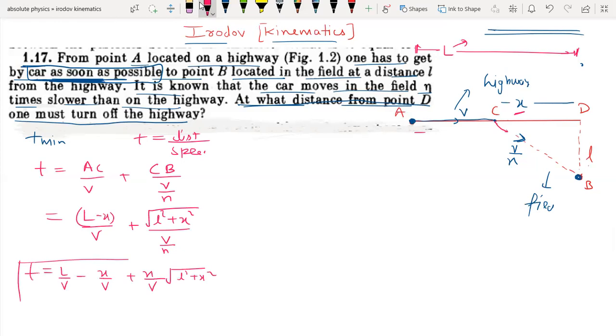This is our time. We need to minimize this. Let's see which variable we have here - we have only one variable, that is X. X is the variable. V is a constant number, N is a constant number, L is also constant. So X is the variable, so we can differentiate it.